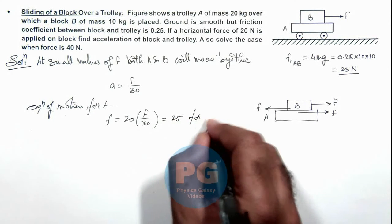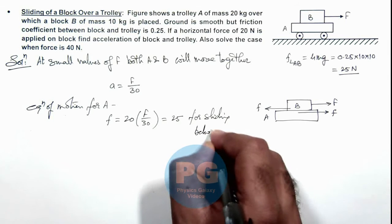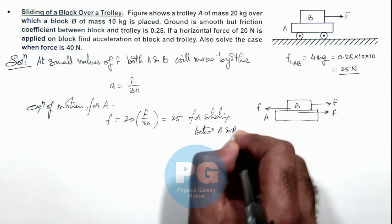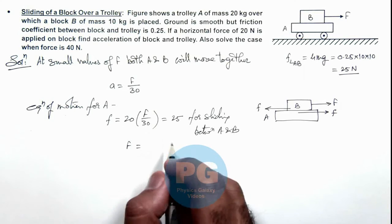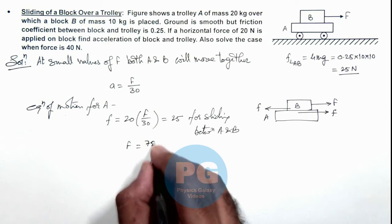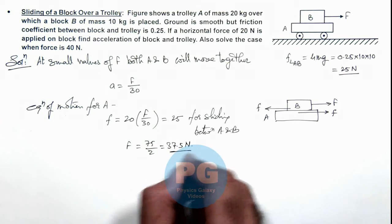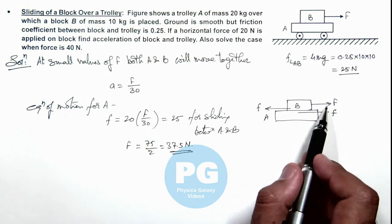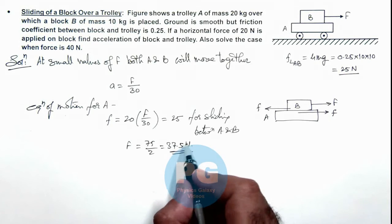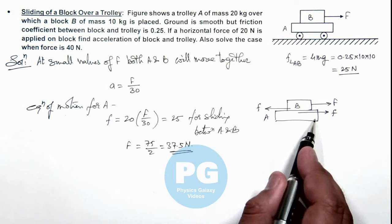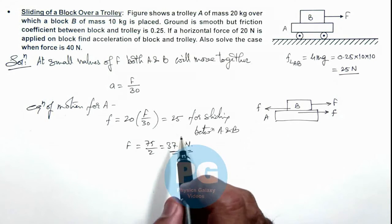So in this situation the value of F we are getting is 75 by 2 that is 37.5 newton. That means when value of external force approaches 37.5 newton, then block B will start sliding over A and friction will be at limiting value 25 newton.